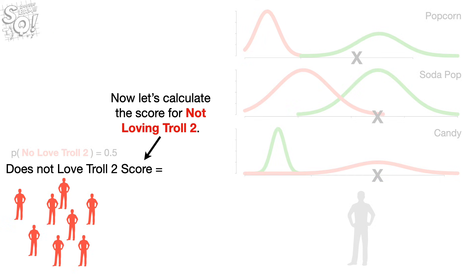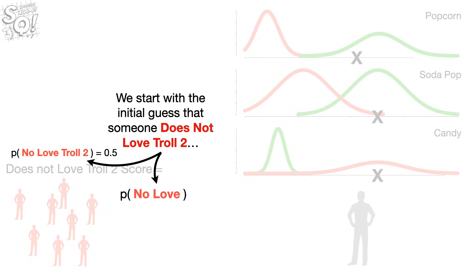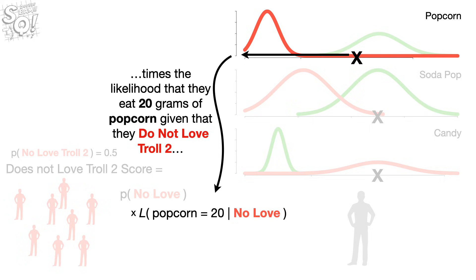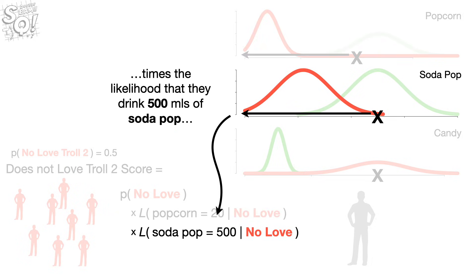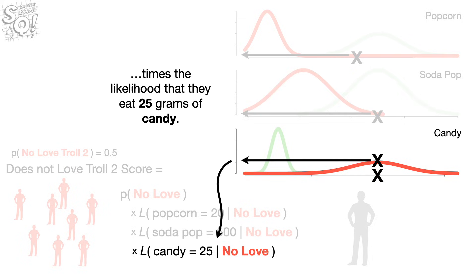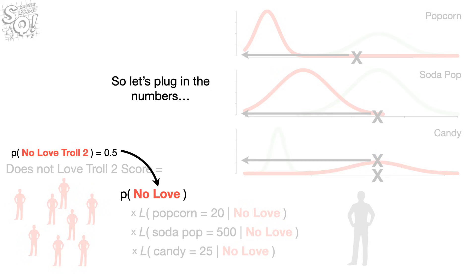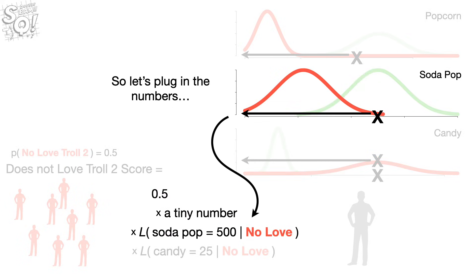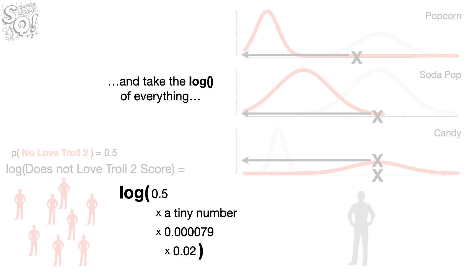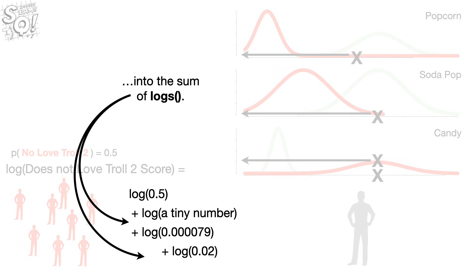Now let's calculate the score for not loving Troll 2. We start with the initial guess that someone does not love Troll 2. Times the likelihood that they eat 20 grams of popcorn given that they do not love Troll 2. Times the likelihood that they drink 500 milliliters of soda pop. Times the likelihood that they eat 25 grams of candy. So let's plug in the numbers. And take the log of everything. And that turns the multiplication into the sum of logs. Now we just do the math.